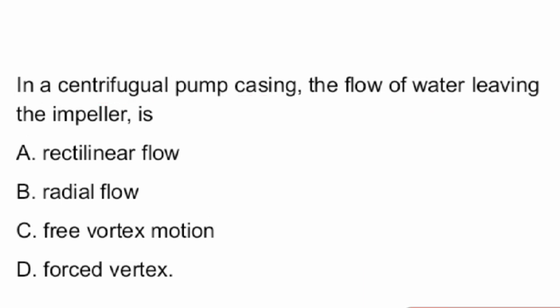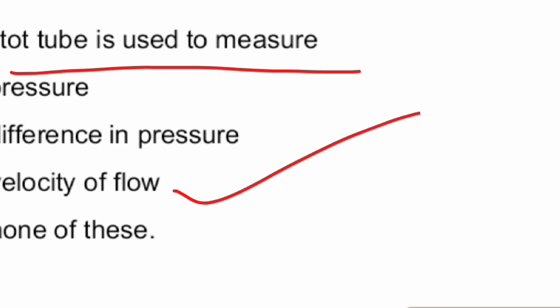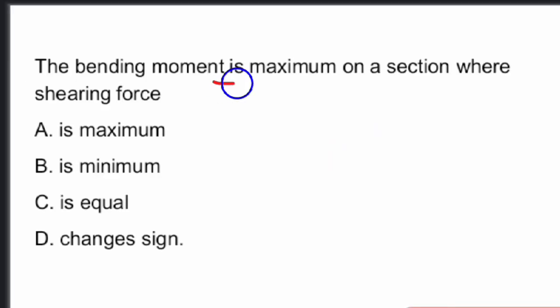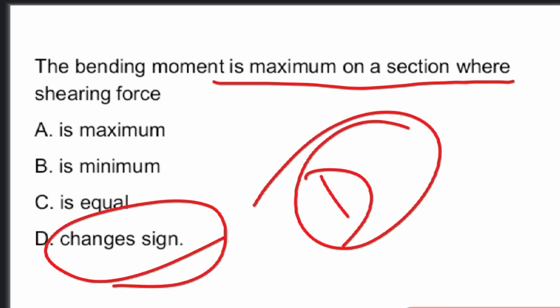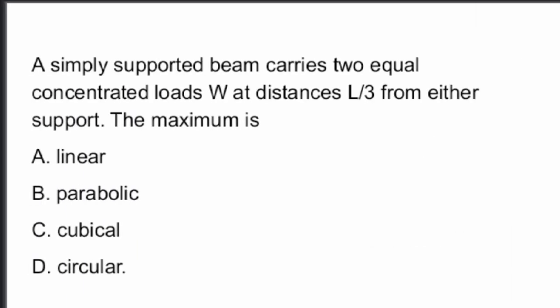A Pitot tube is used to measure what? It is used to measure velocity of flow — Option C is the right answer. Next, the bending moment is maximum on the section where the shearing force changes its sign — Option D is the right answer.